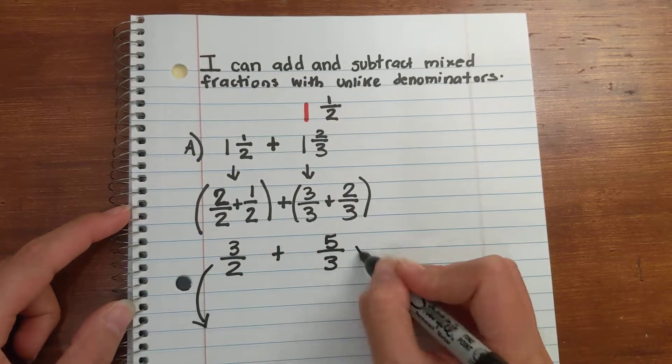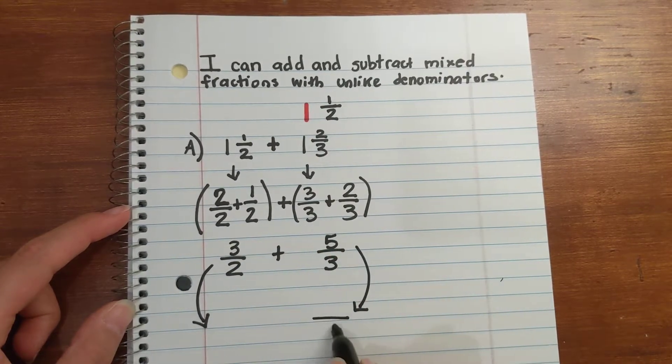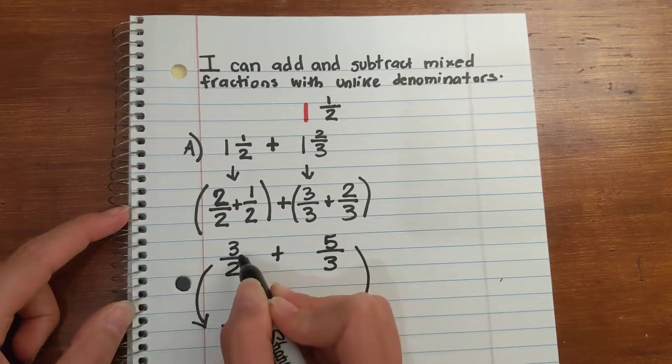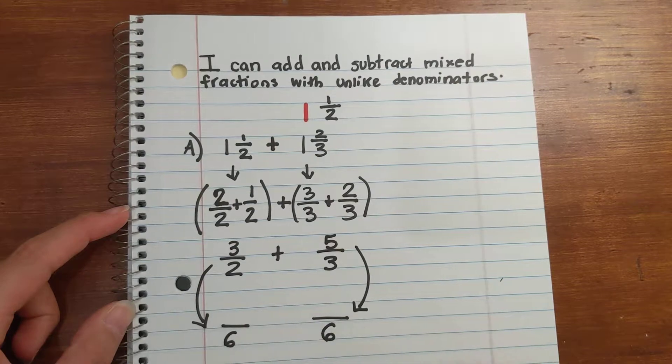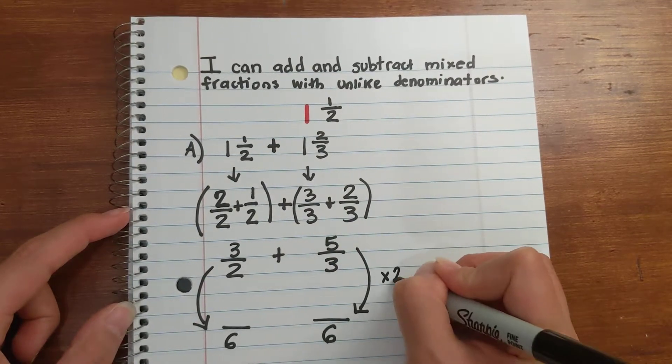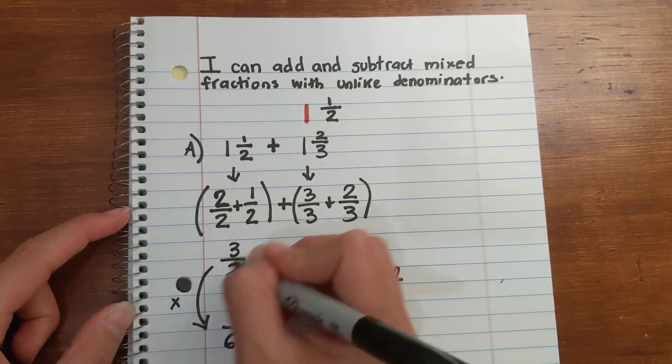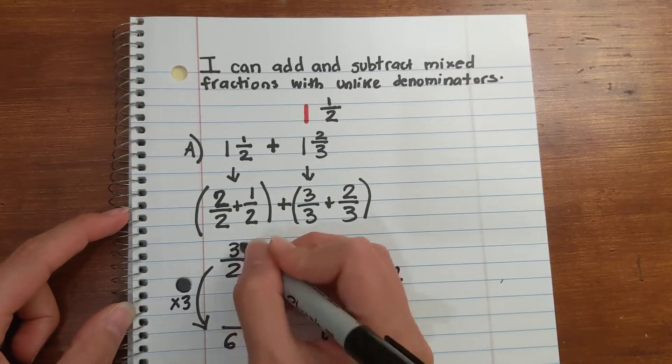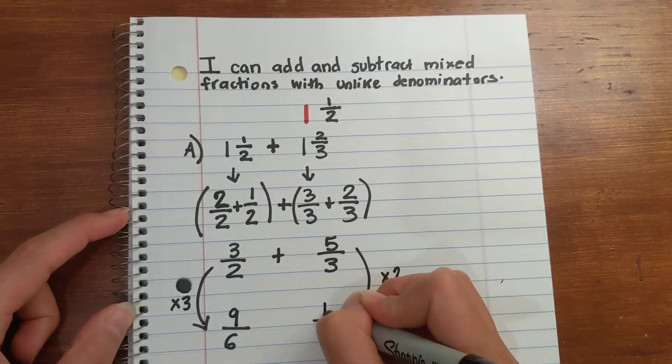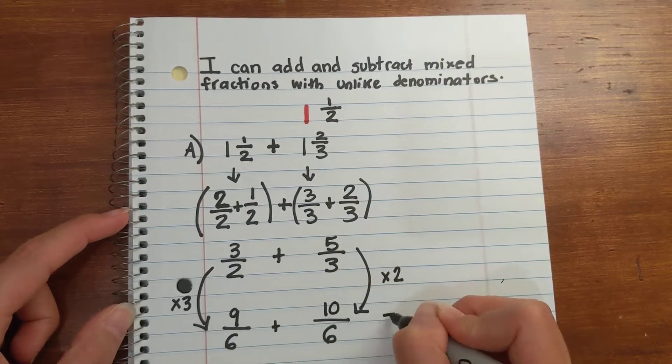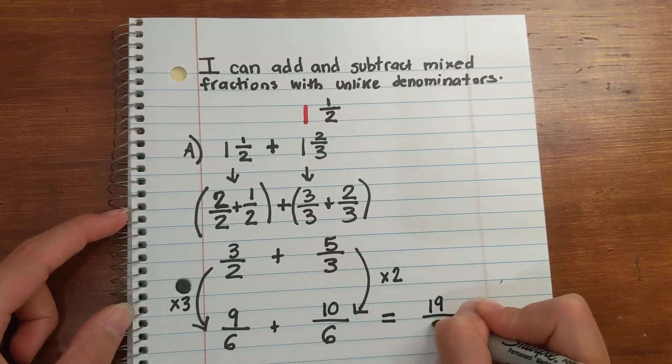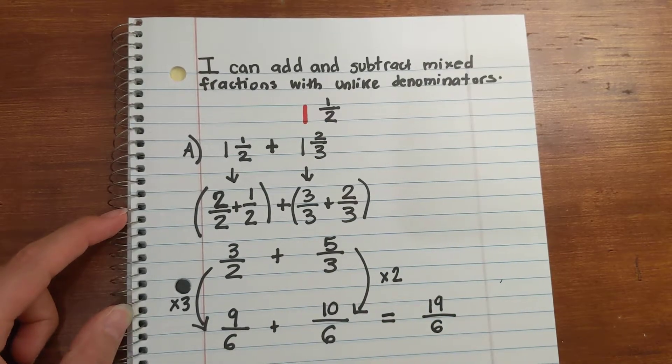Okay, now I'm going to use that least common denominator of 6. I'm going to find an equivalent fraction for 5 thirds and for 3 halves. I like to draw these arrows because I'm saying, okay, I have to multiply by 2, multiply by 3. So 2 times 3 is 6, 3 times 3 is 9, 3 times 2 is 6, 5 times 2 is 10. Now I can add: 9 plus 10 is 19, and then the denominator is the same, 19 sixths.